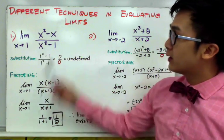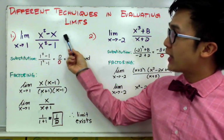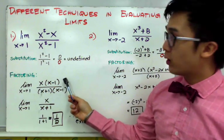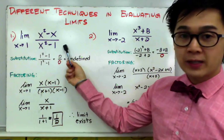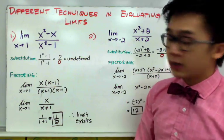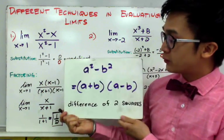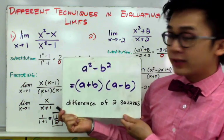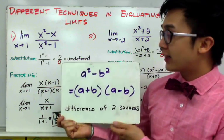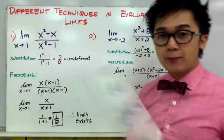By the factoring method, the numerator x squared minus x can be factored by pulling out the GCF, giving x times x minus 1. The denominator is a difference of two squares: x squared minus 1 factors as a plus b times a minus b, which is one technique we can use to simplify rational functions.